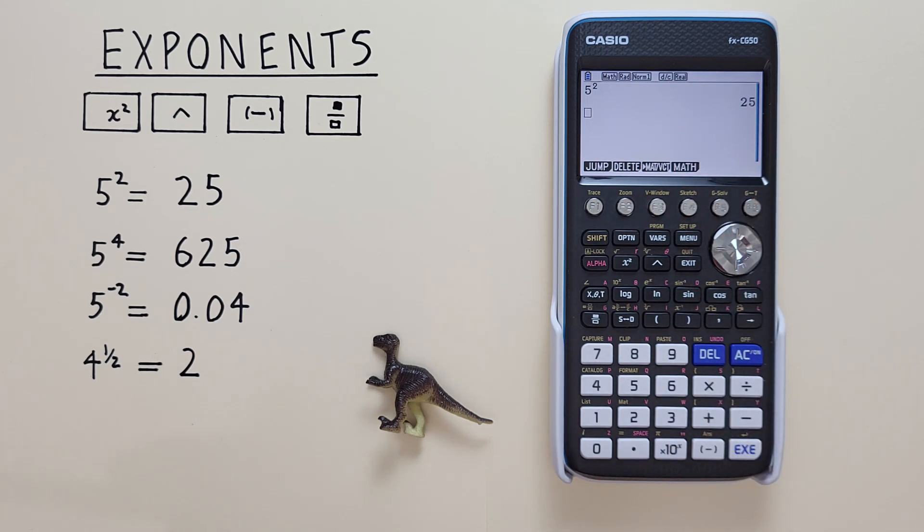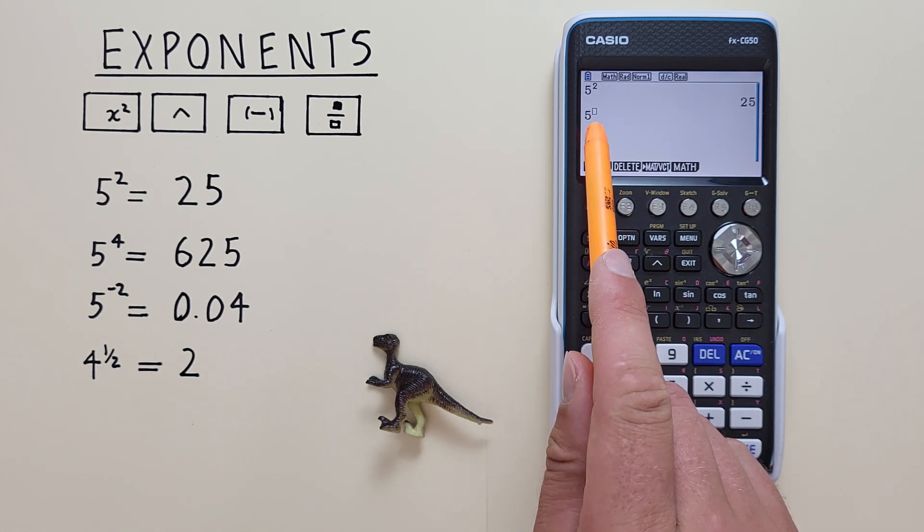But what if we want to find an exponent that isn't a 2 or a square? To do that we use the up arrow or caret key. So for example if we want to find 5 to the power of 4, again we put the 5 on our screen, and then hit the up arrow or caret key, and there we get a box for our exponent.